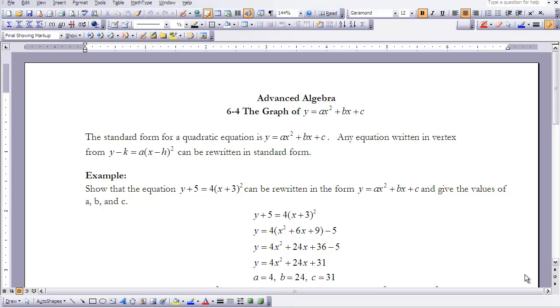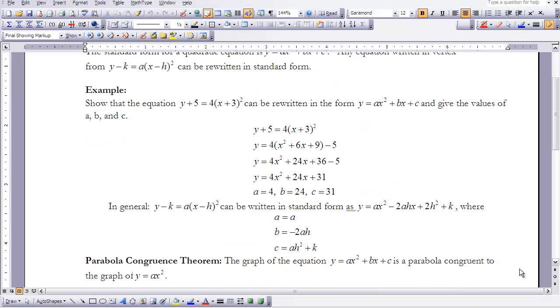So one of the skills that we're going to be working on in this lesson is taking an equation from vertex form and putting it into standard form. I have an example worked out here for you to follow. The question says, show that the equation y plus 5 equals 4 times the quantity of x plus 3 squared can be written in the form y equals ax squared plus bx plus c and give the values of a, b, and c.